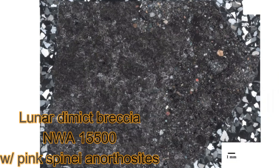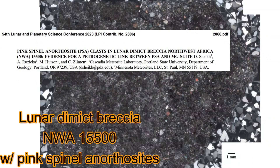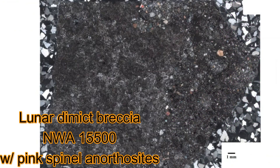Finally, this is my most recent lunar meteorite classification — a lunar dimict breccia. 'Dimict' means two, so you have two different lithologies present. I've submitted an abstract for this to the Lunar and Planetary Science Conference. I'm not going to spoil anything interesting about it, but it does have a very unusual lithology called pink spinel anorthosite. You can't really see it in this transmitted light cross-polarized view because the spinel grains go extinct under cross-polarized light.